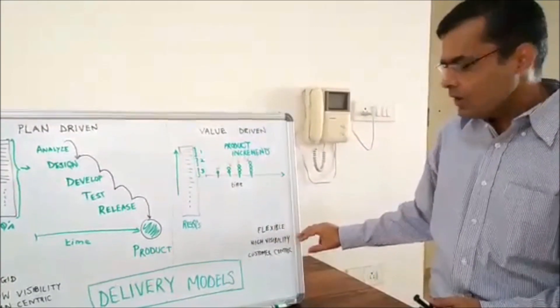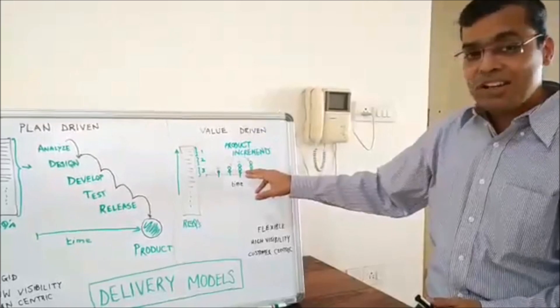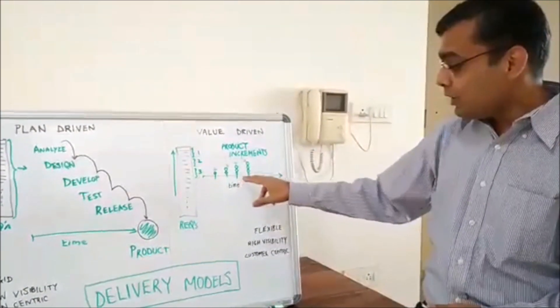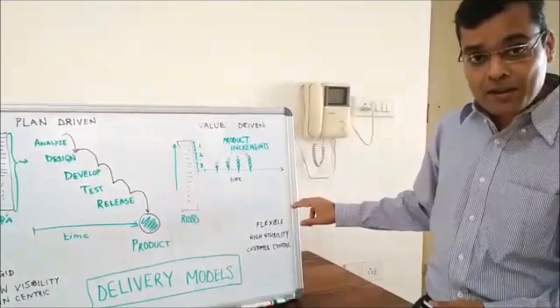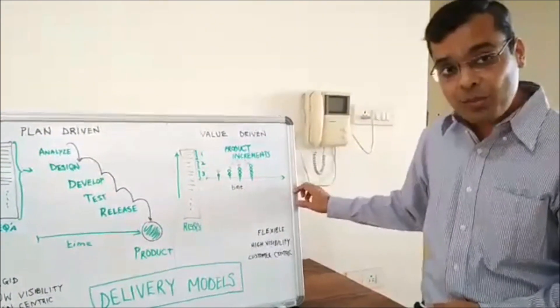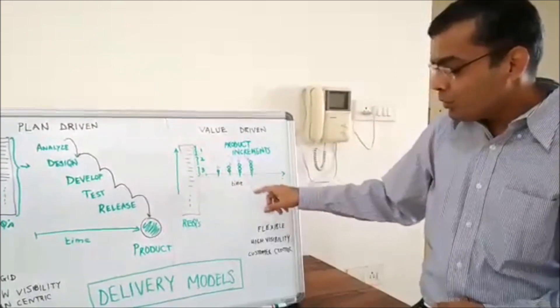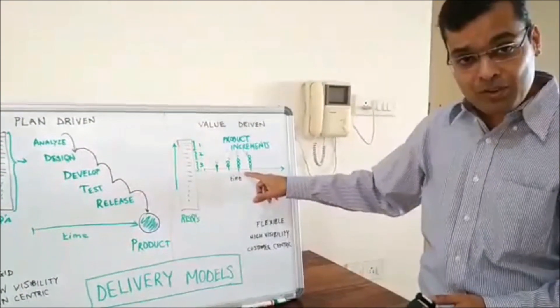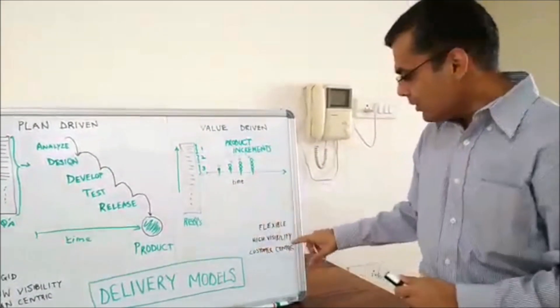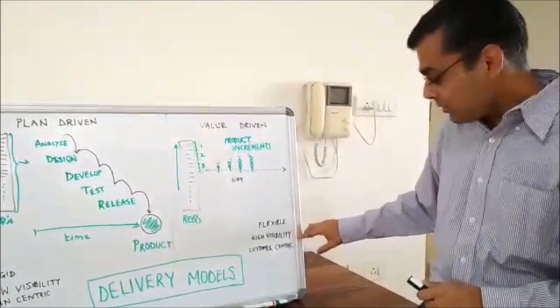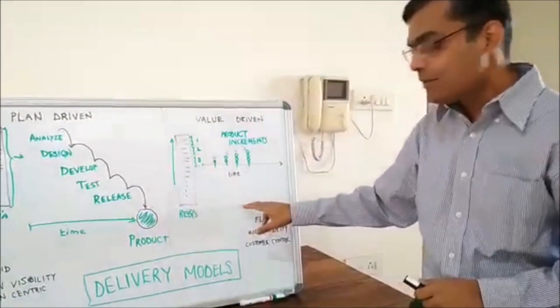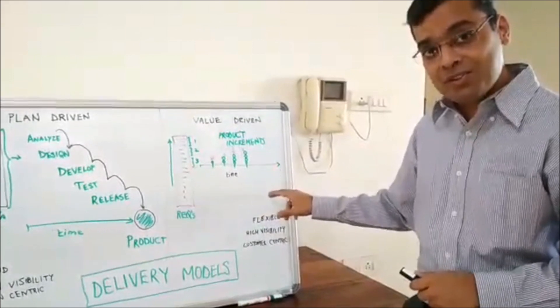The next is high visibility. Now as I mentioned earlier that we can release to the customer. The customer will be happy now because they don't have to wait till the end of the entire project to see what the product looks like. So now since they know some bit of the functionality, they can use it and they can give the feedback to the team. So it's high visibility for the customer and it's customer centric. Unlike the plan centric over here, you focus more on the customer.